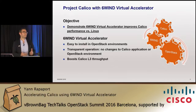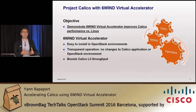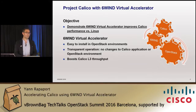Calico is an alternative to L2 virtual switching with OVS or Linux bridge — it's just a different approach. It doesn't use overlays, and Calico is integrated with OpenStack.